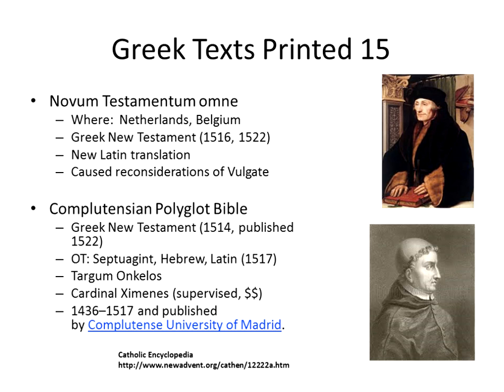At that time, there were two efforts for scholarly work. One that was long term and focused was the Complutensian Polyglot Bible, which was a new set of Greek texts — Old Testament Septuagint, Hebrew and Latin texts, the Targum Onkelos. This was done by Cardinal Ximenes in Spain at the University of Madrid in the Complutensian project. He supervised it and gave money, and was very careful. He actually finished the Greek New Testament in 1514, but due to checking on the Septuagint, Latin, and all the rest, he did not publish it until 1522.